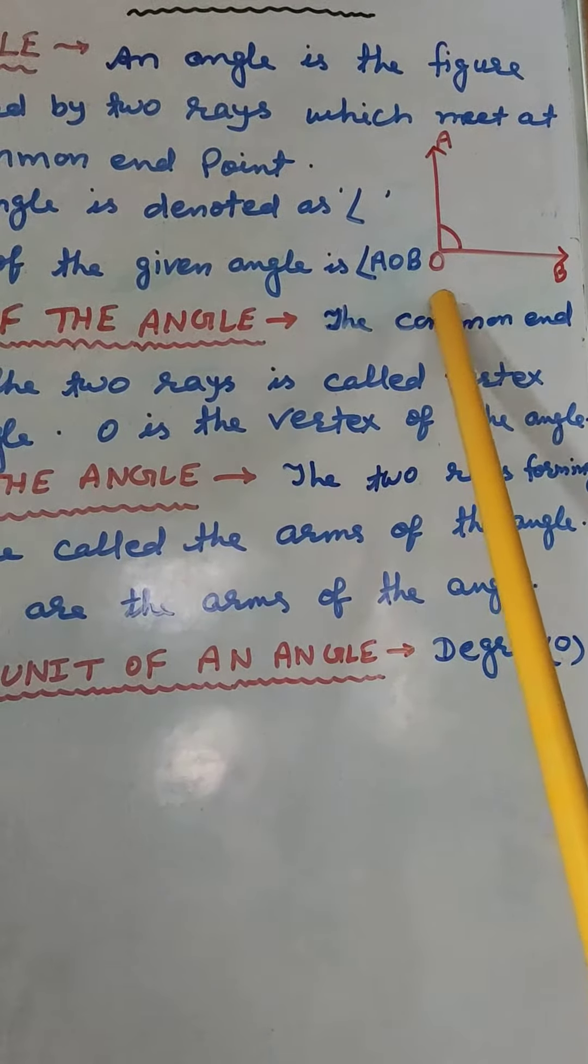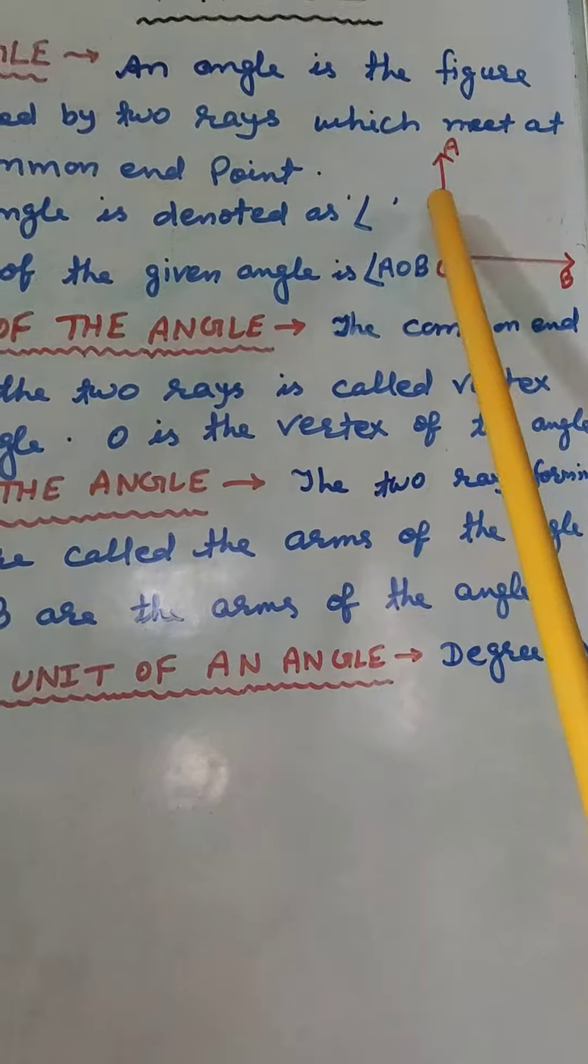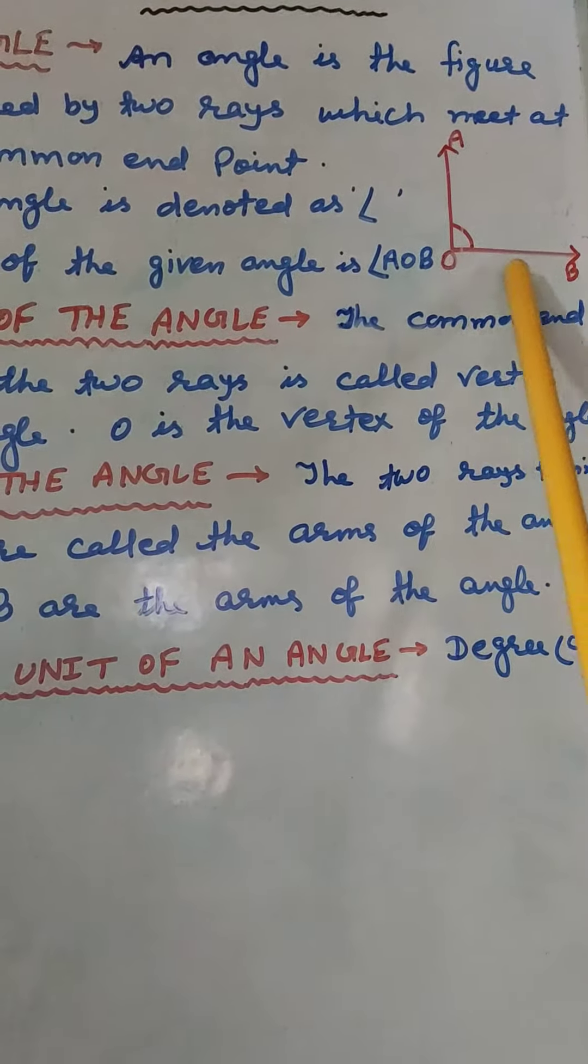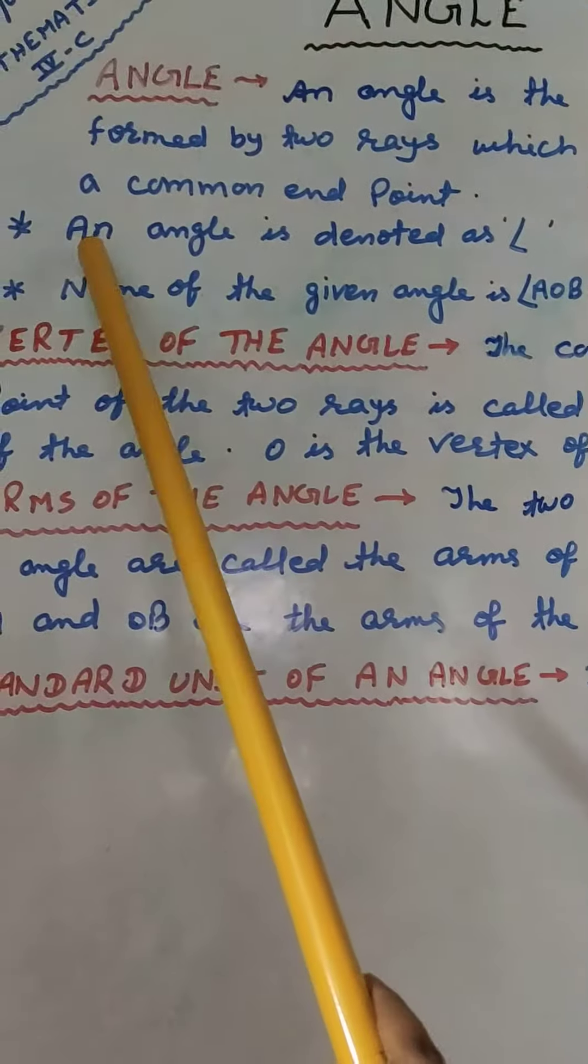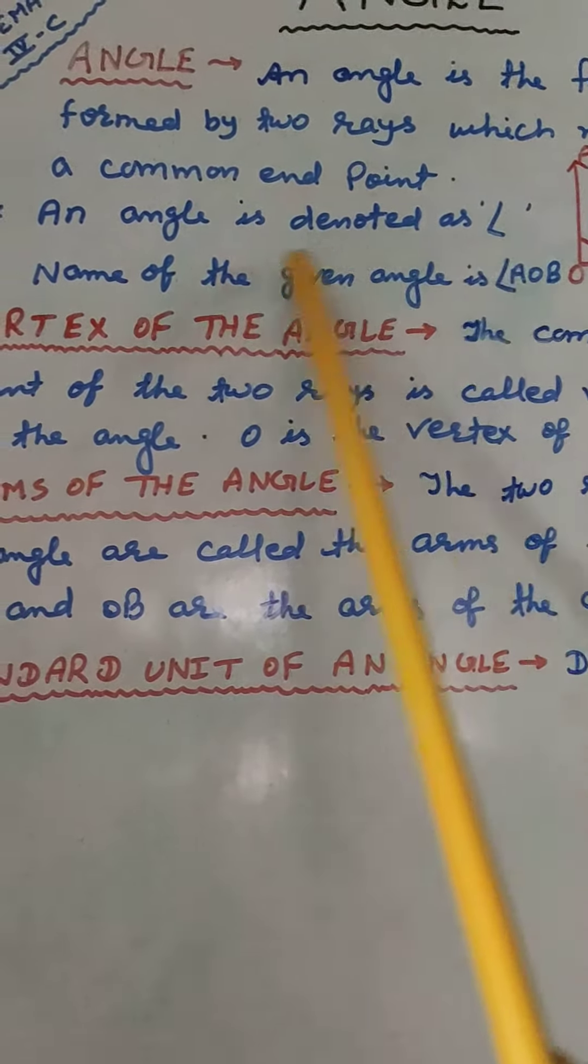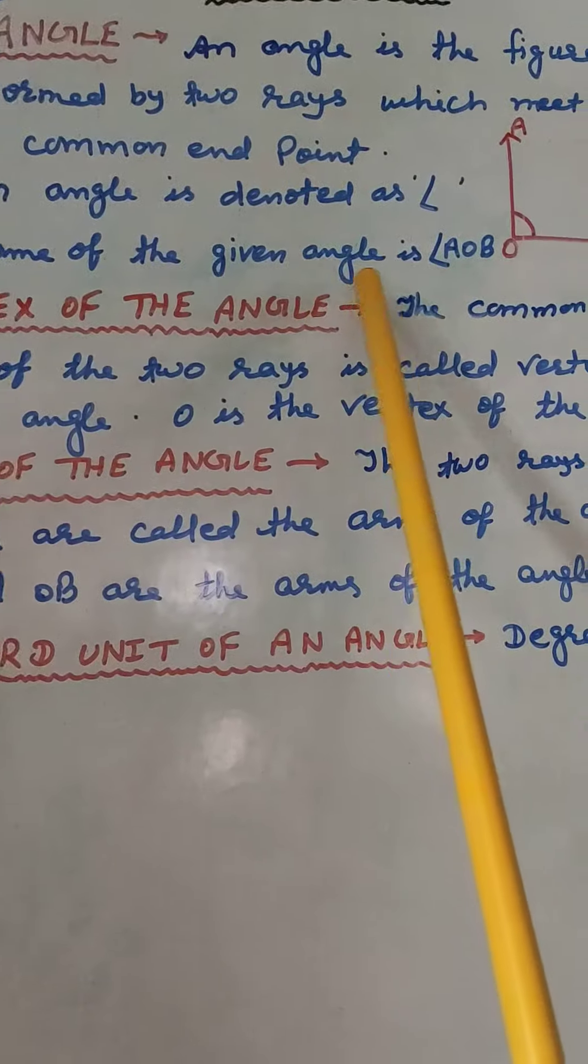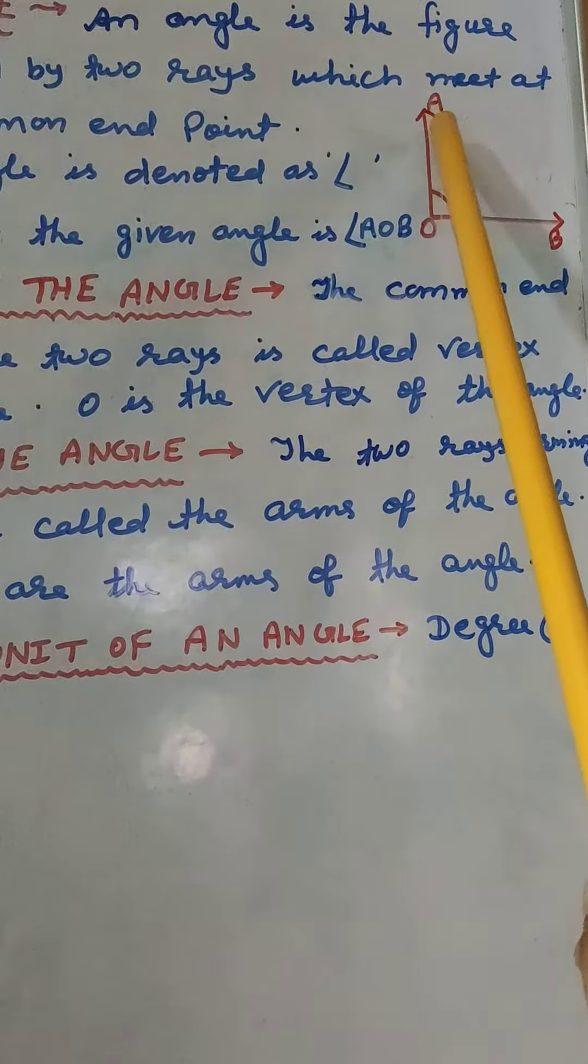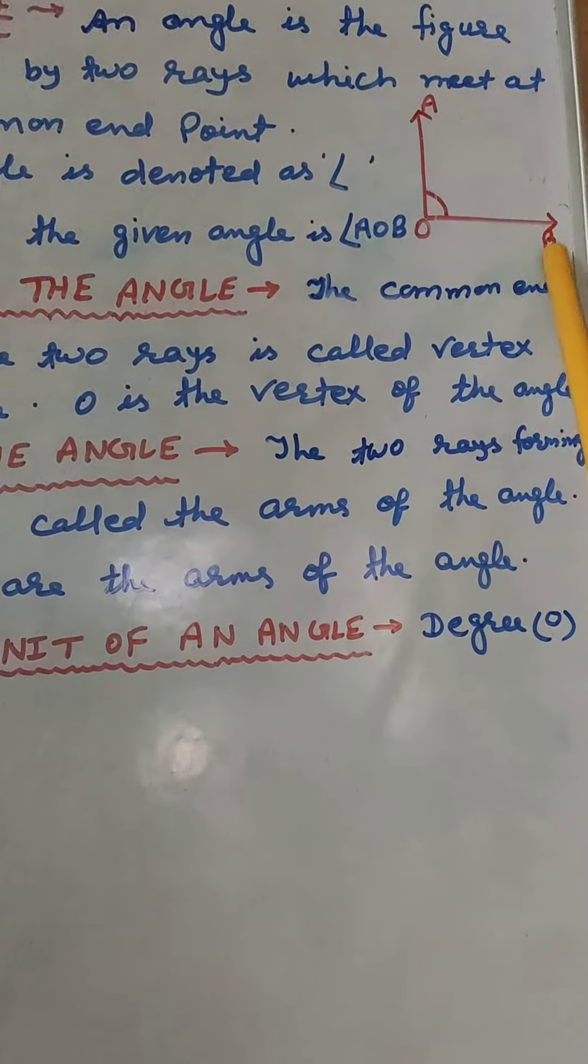O is a common end point where two rays meet. An angle is denoted as this symbol. And name of the given angle is angle AOB.